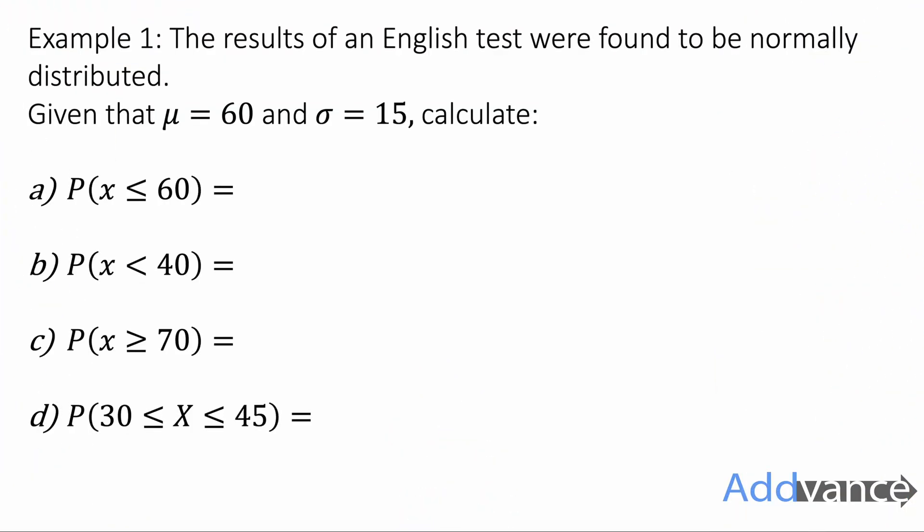Okay, let's see how we would calculate this using a GDC. The results of an English test were found to be normally distributed with a mean of 60 and a standard deviation of 15. Calculate the probability that x will be less than or equal to 60, probability that x is less than 40, probability that x is more than or equal to 70, and the probability that x is between 30 and 45.